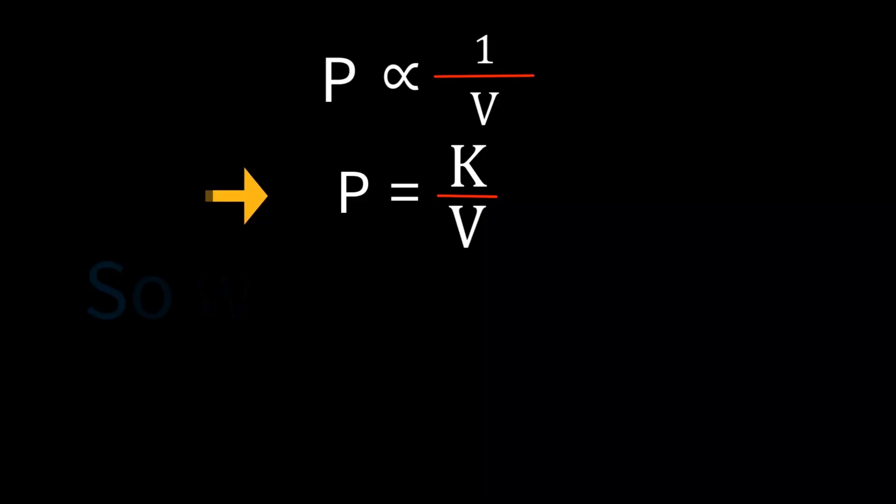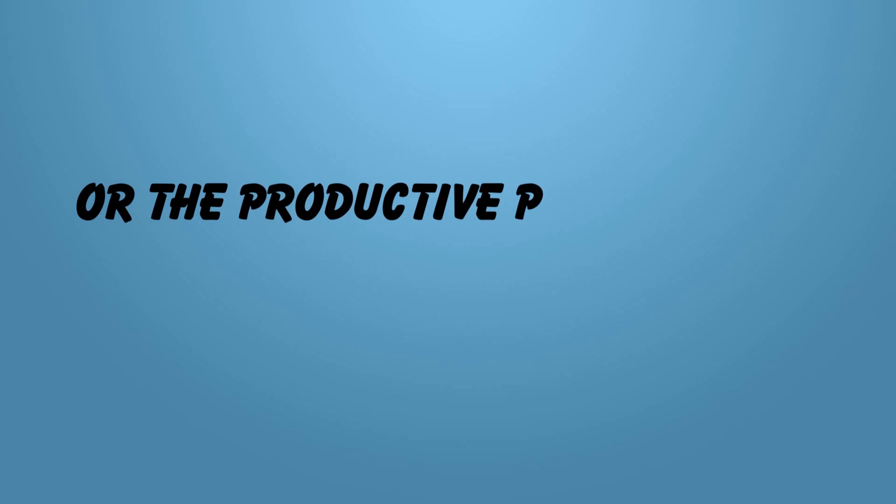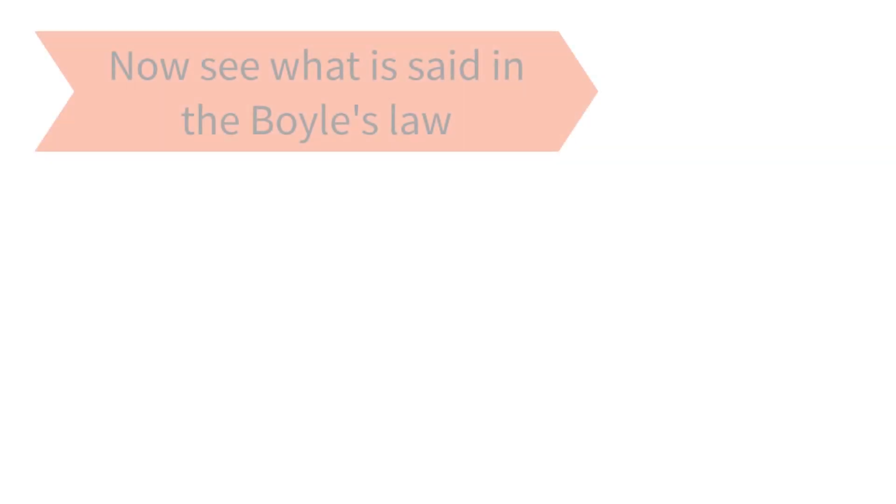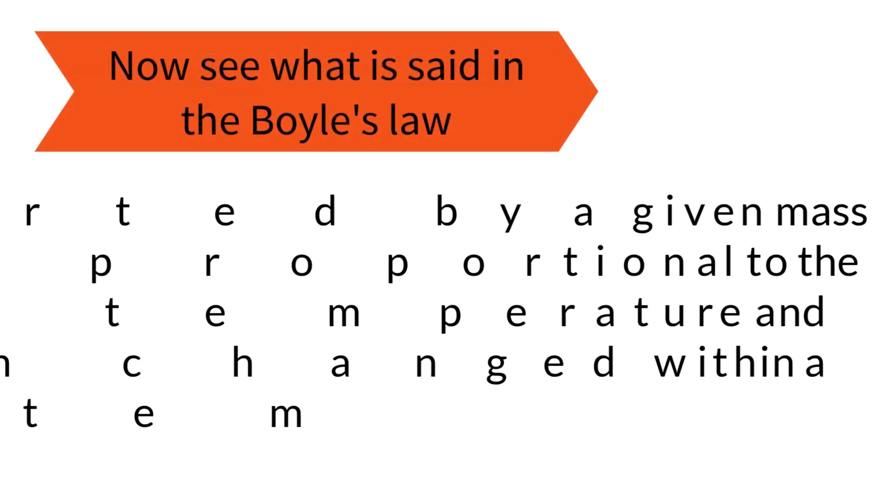We can rearrange this equation. So we get PV equals K, or the product of pressure and volume is a constant K. Now we will see what is said in Boyle's Law.